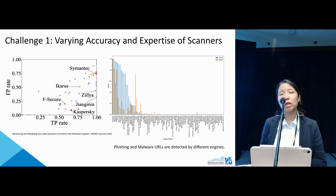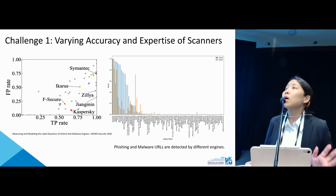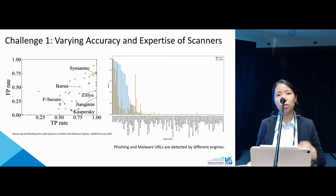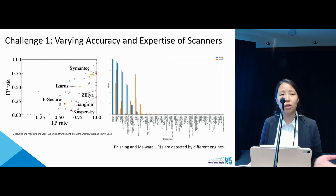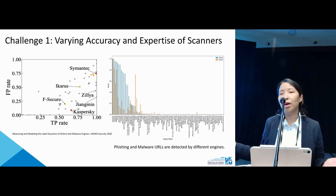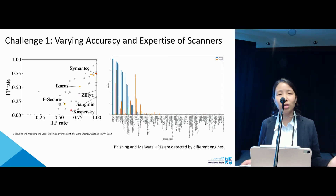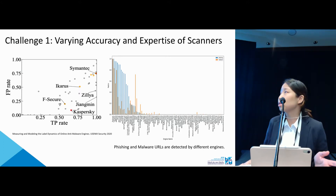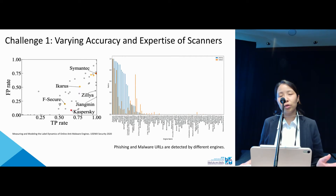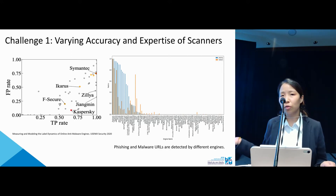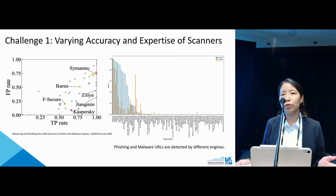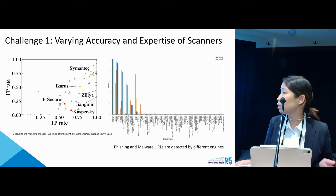There are multiple challenges when aggregating intelligence sources. First, different scanners have different expertise. The figure on the right shows that phishing URLs may be detected by phishing scanners but not by malware URL scanners, and malware URLs may be detected by malicious URL scanners but not by phishing scanners. Because of these different expertise, scanner performance depends on each type of internet threat, and many scanners do not achieve a good balance between true positive rate and false positive rate.